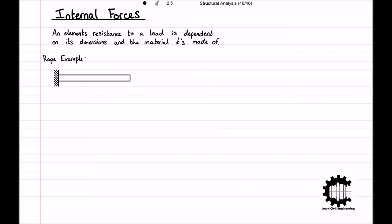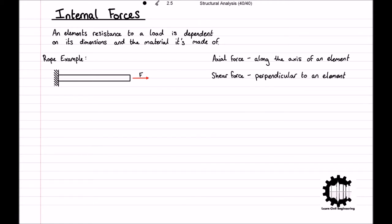A simple example of the forces and moments transmitted through an element is a length of rope. Imagine we have a rope of arbitrary length which has been tied on the left hand side and is being pulled in the right hand direction. This pulling action can be represented by the force F parallel to the rope and acting towards the right, and this force is being transmitted along the entire length of rope. This internal force F is an axial force as it's being applied along the axis of the element. However, internal forces can also be shear, which are perpendicular to the element, or they can be moments which result in bending moments.